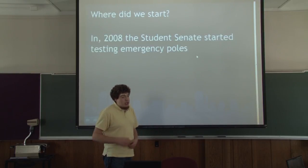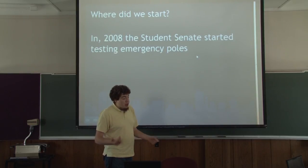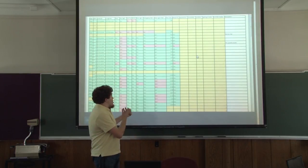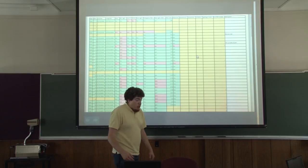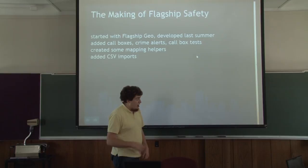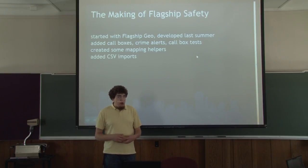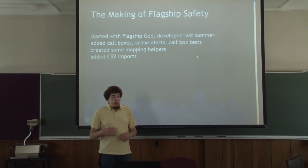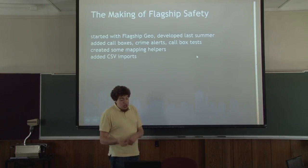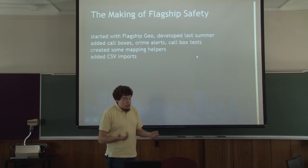I think I went over this last time, but we started back all the way in 2008 with collecting data, and we came up with this spreadsheet right here, which is nice and color-coded but isn't necessarily as meaningful to someone looking at it. So I took Flagship Geo, which was a mapping framework basically developed last summer for ARCOS, and I added all sorts of data models to store the testing information that we were taking.